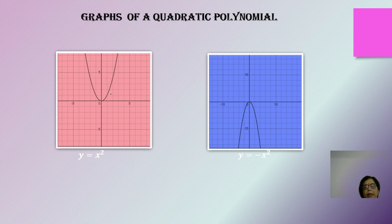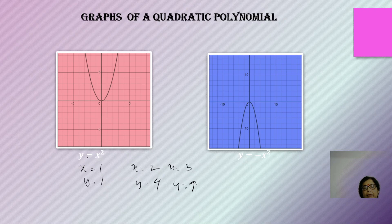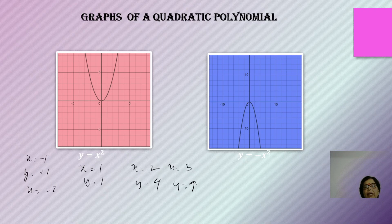Why do we get this particular shape? If x = 1, y = 1; if x = 2, y = 4; if x = 3, y = 9. The y-value is the square of x, so this graph line increases along the positive direction. When we take negative values of x, say x = -1, y = +1; x = -2, y = +4. The values of y are all positive, so we get a graph line completely symmetrical about the y-axis.